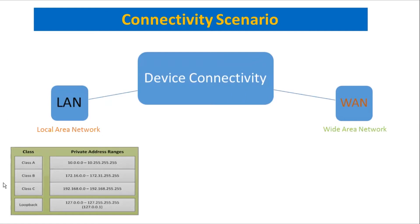These IP schemes are not always configured on a WAN. There are classes — A, B, C, D — and three of these classes are reserved for private networking. These IPs cannot be routed on the internet.